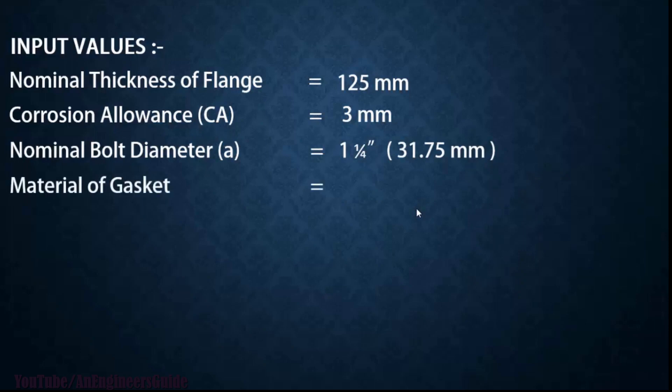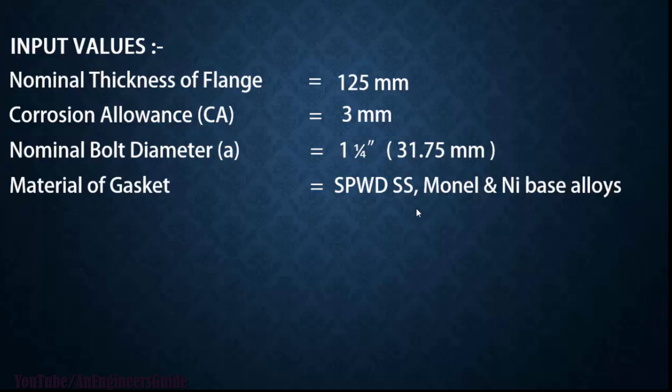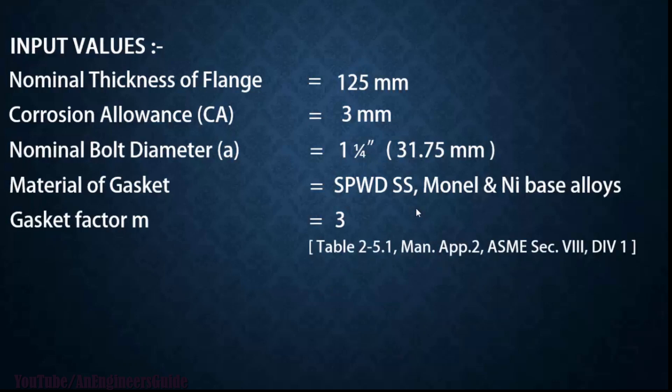Material of gasket we have considered is spiral wound stainless steel monel and nickel base alloy. Gasket factor M equals 3. That value you will get from table 2-5.1 mandatory appendix 2 ASME Section 8 Division 1.